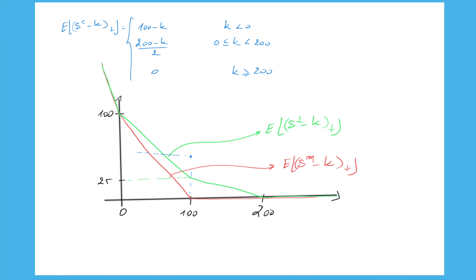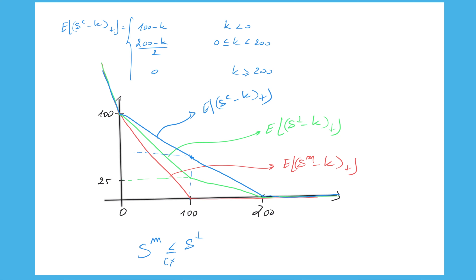We now add the comonotonic stop-loss curve to the existing plot. The red line is the stop-loss curve of the mutually exclusive sum, the green line is the stop-loss curve of the independent situation, and the blue line is the comonotonic stop-loss curve. The blue plot is always above the green and the red between 0 and 200, and equals them above 200 and below 0. The comonotonic sum is the most extreme situation.